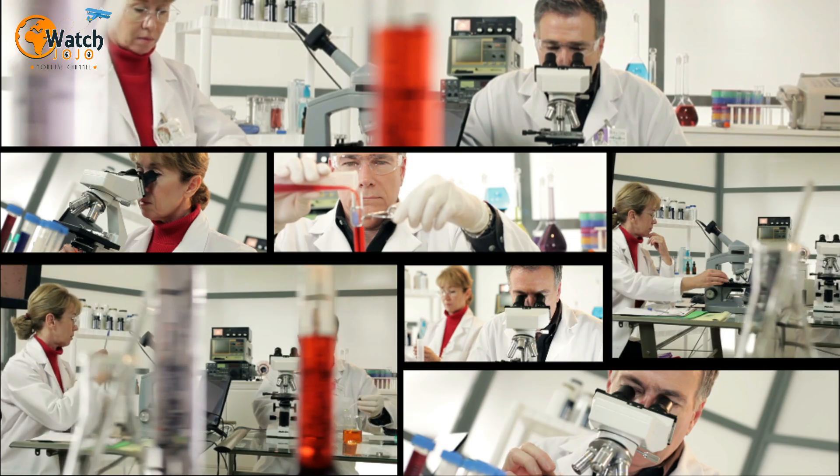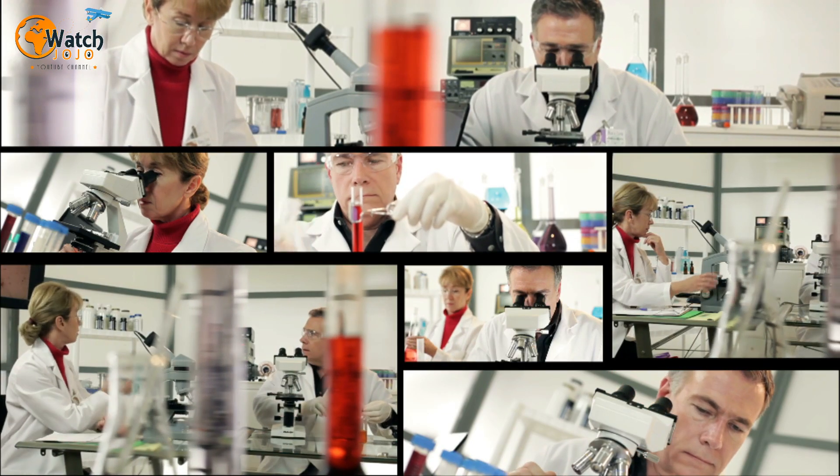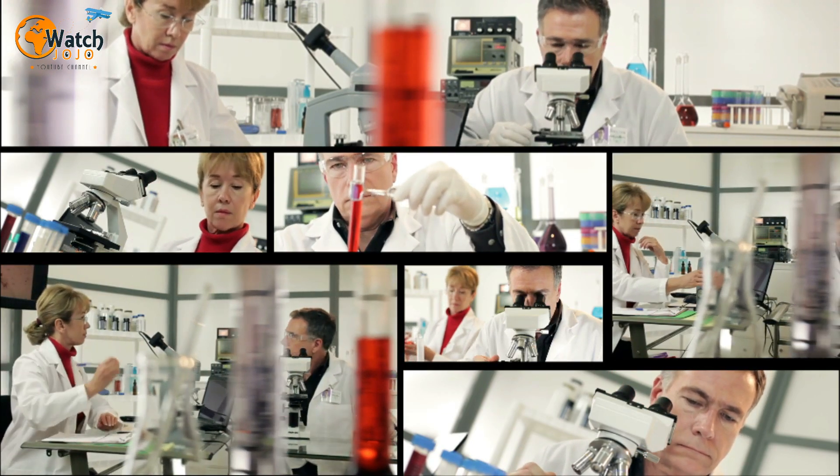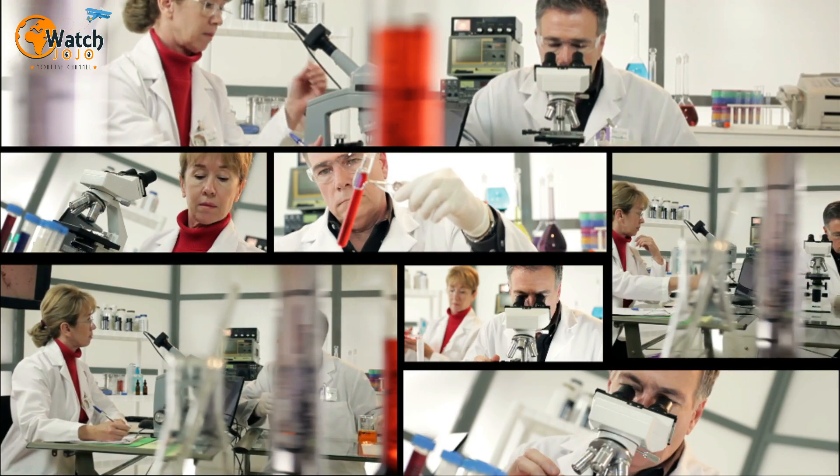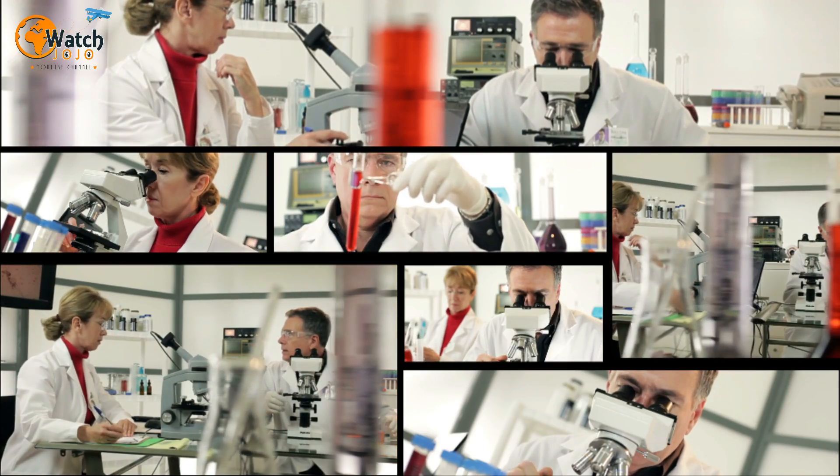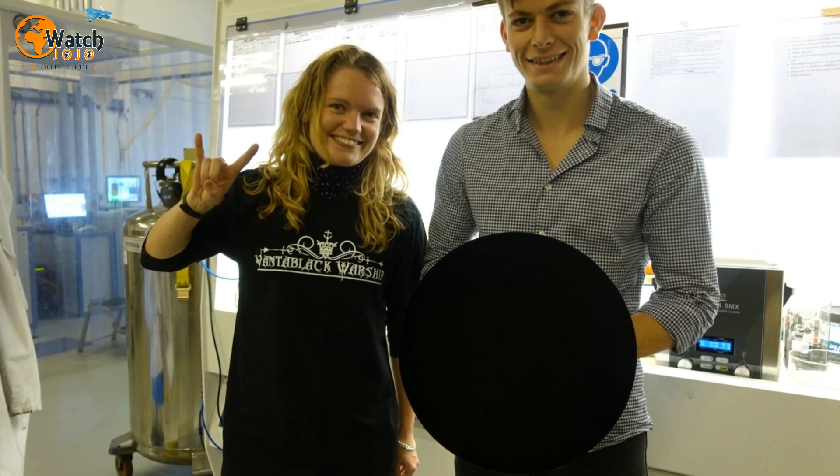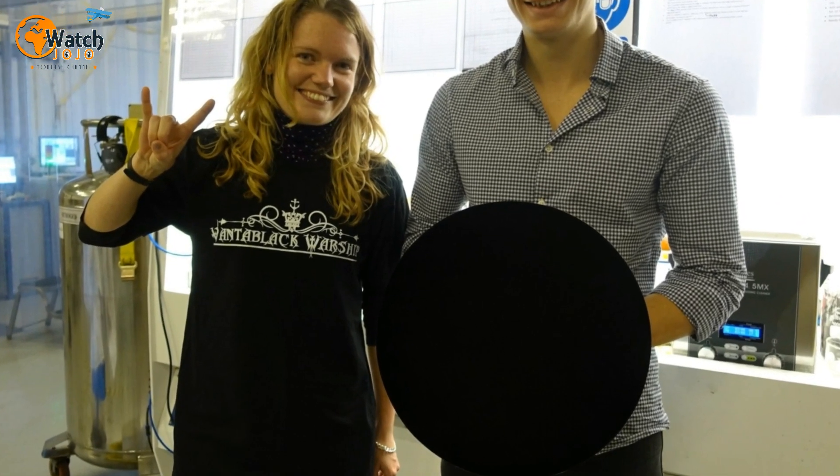The black paint used on Hubble is 17 times more reflective, so Vantablack can help the telescope capture clear images without any light interference. According to Business Insider, Vantablack is so black that no one can measure how dark it really is.